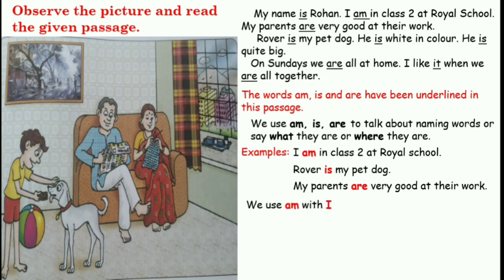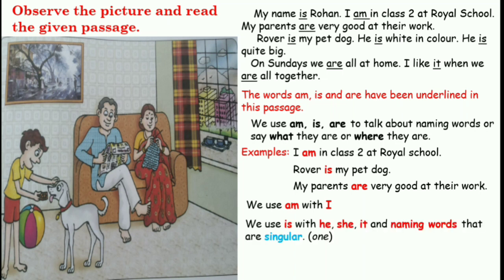Now let's see how and when we use them. We use am with I — like you can see in the first sentence, I am in class 2. So I is used with am, or in other words, you use am when you have the pronoun I. We use is with he, she, it and naming words that are singular.